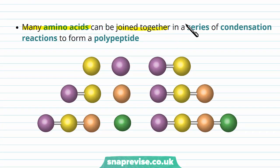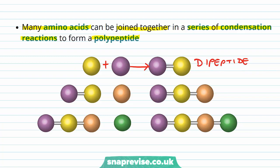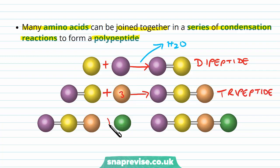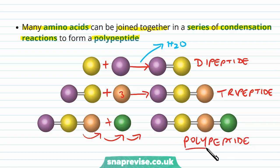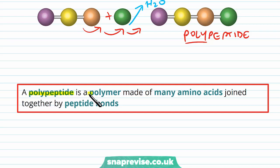Many amino acids can be joined together in a series of condensation reactions to form a polypeptide. First we have two amino acids forming a dipeptide with water lost; this dipeptide can then have another amino acid added, forming a tripeptide. You can keep adding amino acids to get longer and longer chains until you get a polypeptide — 'poly' meaning many. Every time you add an amino acid, water is lost in every condensation reaction. So by definition, a polypeptide is a polymer made of many amino acids joined together by peptide bonds in condensation reactions.